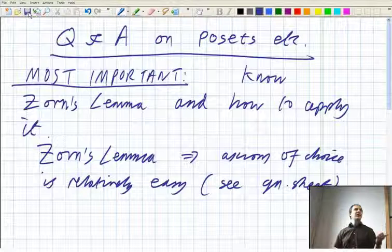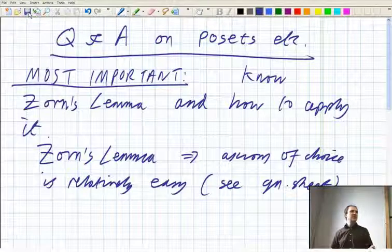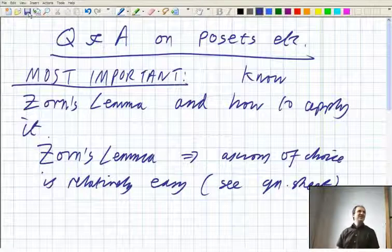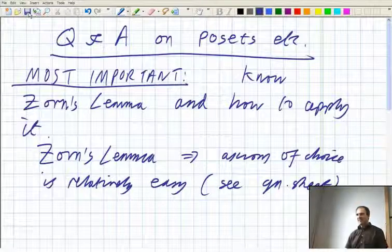Basically, you try to define your choice function on as many sets as possible, and then you can always define it on one more set. And then the Zorn's lemma gets you home, and then you've got your choice function defined on everything.